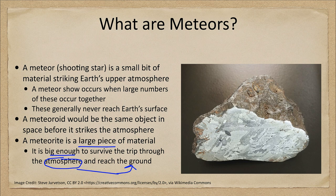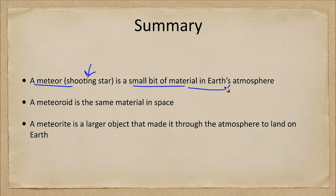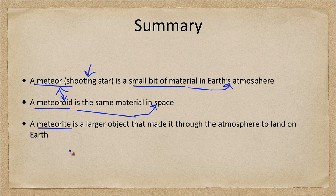So let's summarize what these three terms mean. A meteor, sometimes called a shooting star, is a small bit of material burning up in Earth's atmosphere. A meteoroid is this same material out in space — before it strikes Earth's atmosphere it's a meteoroid, and while it's vaporizing in the atmosphere it's a meteor. If it is large enough to land on Earth, then it becomes a meteorite — the large object that survived the trip through the atmosphere to land here on Earth for us to study.